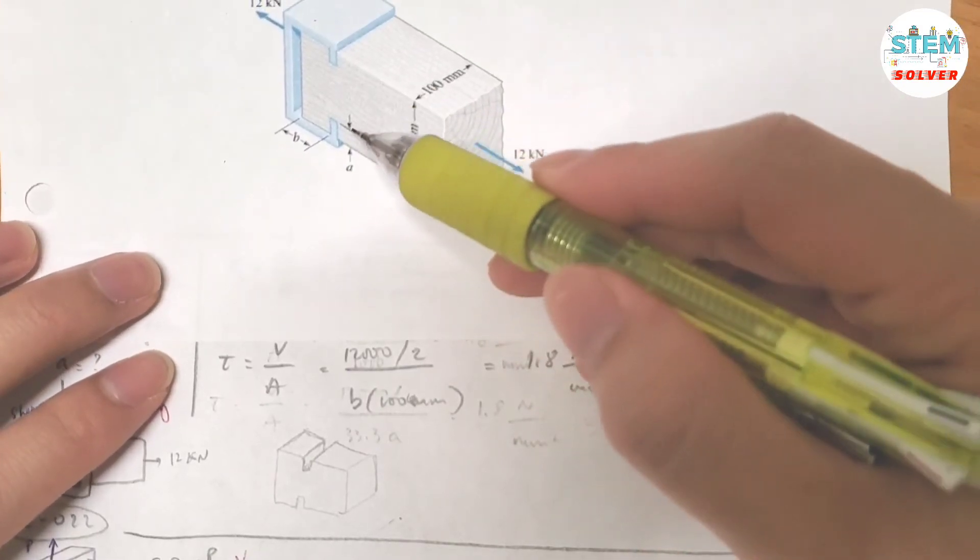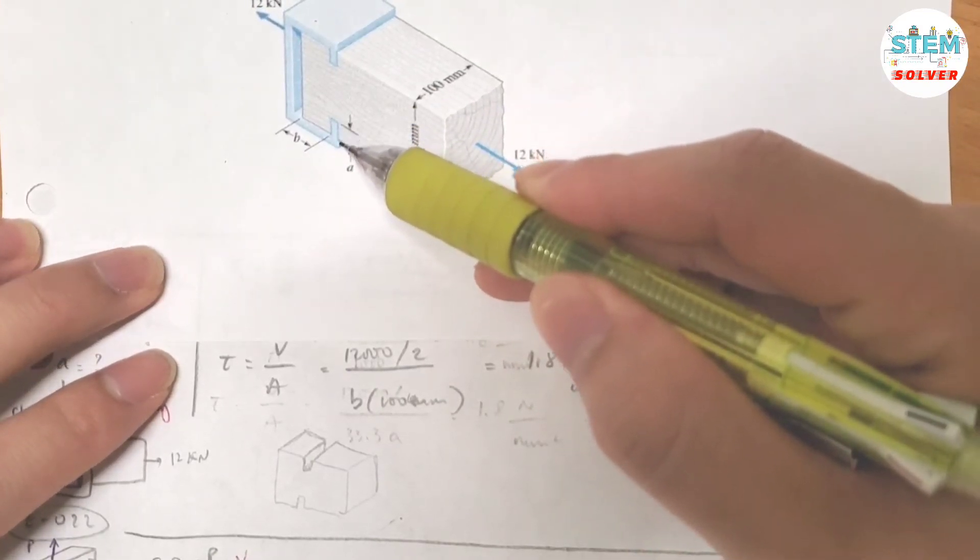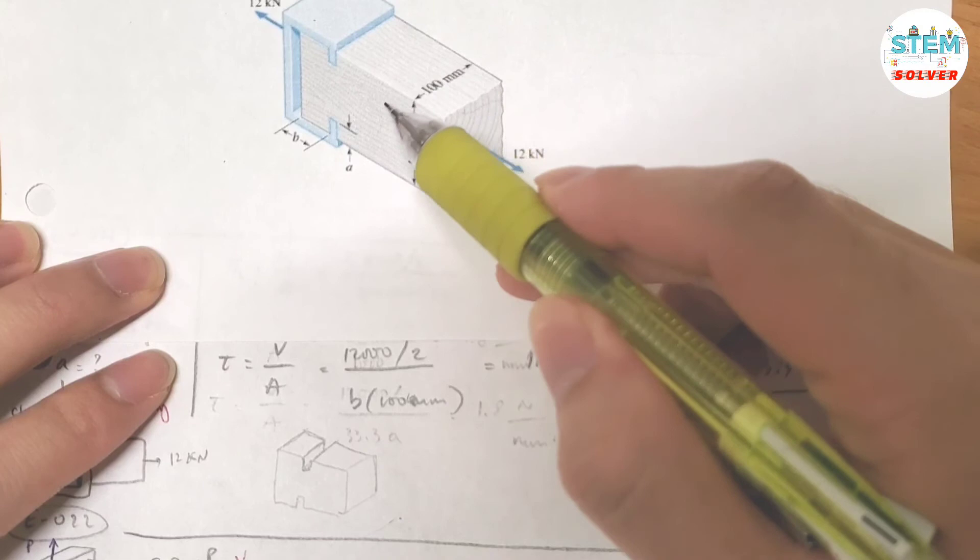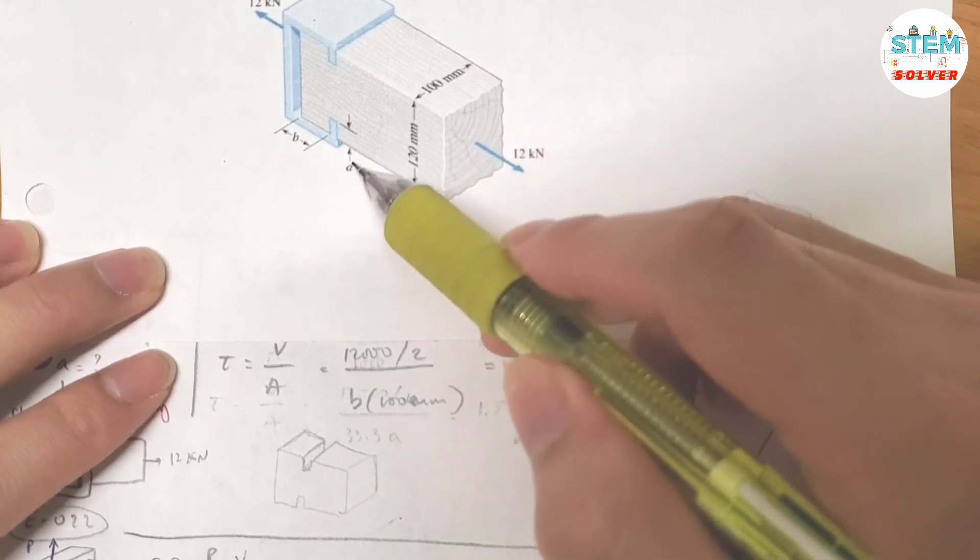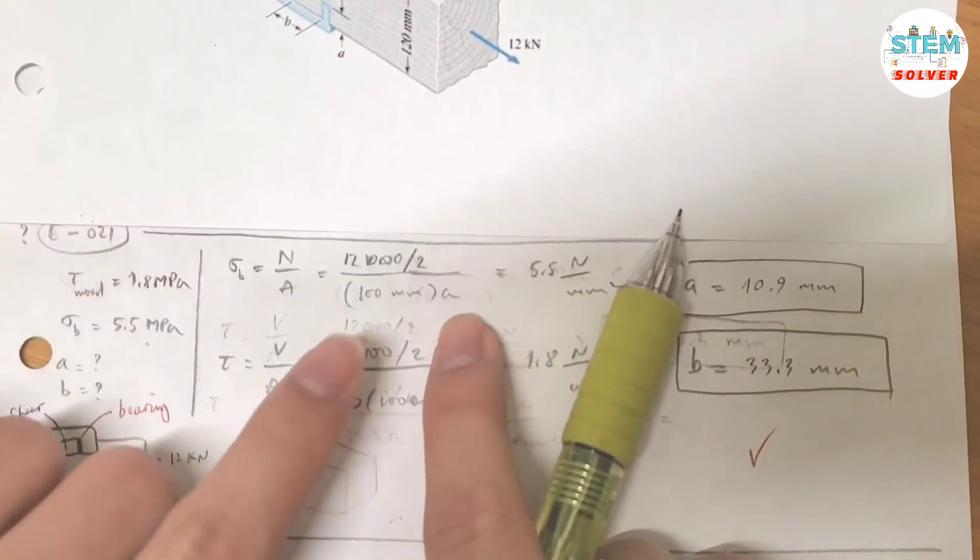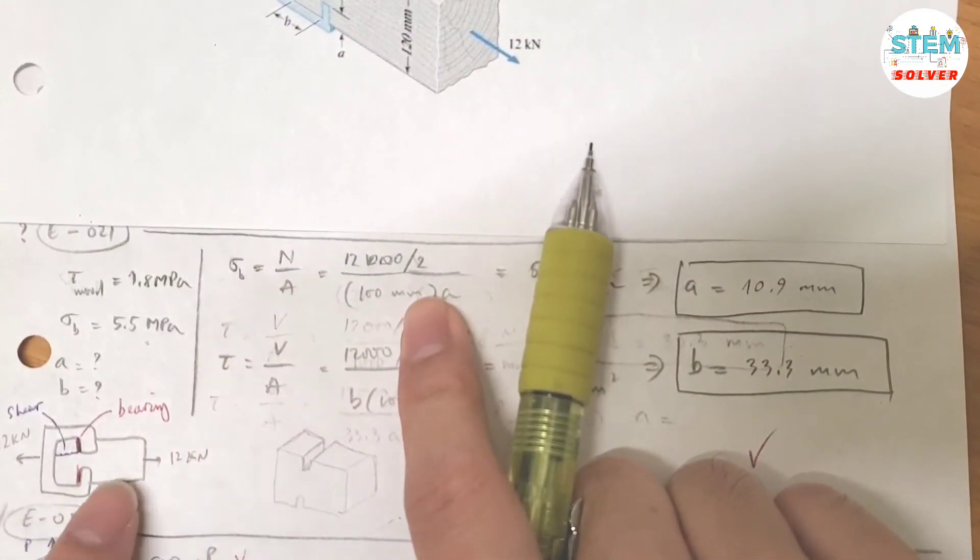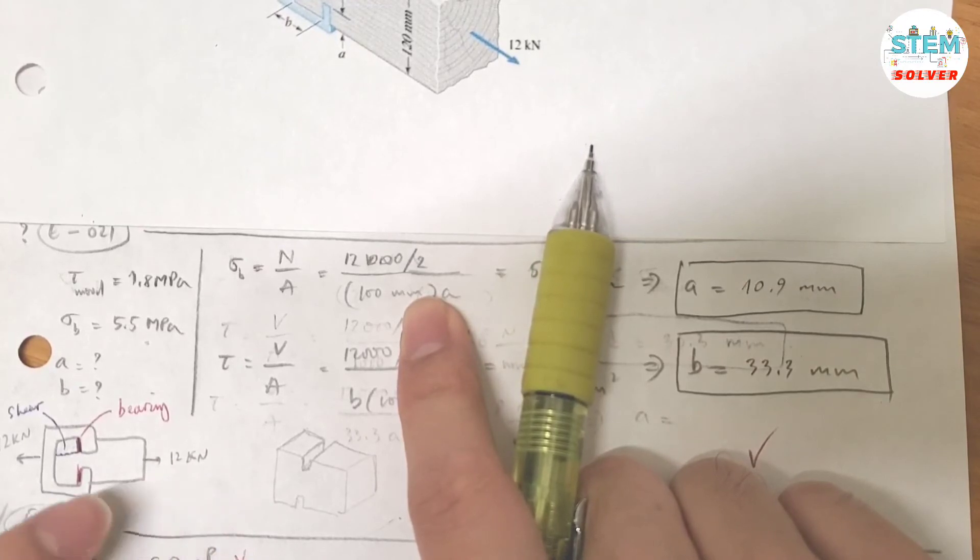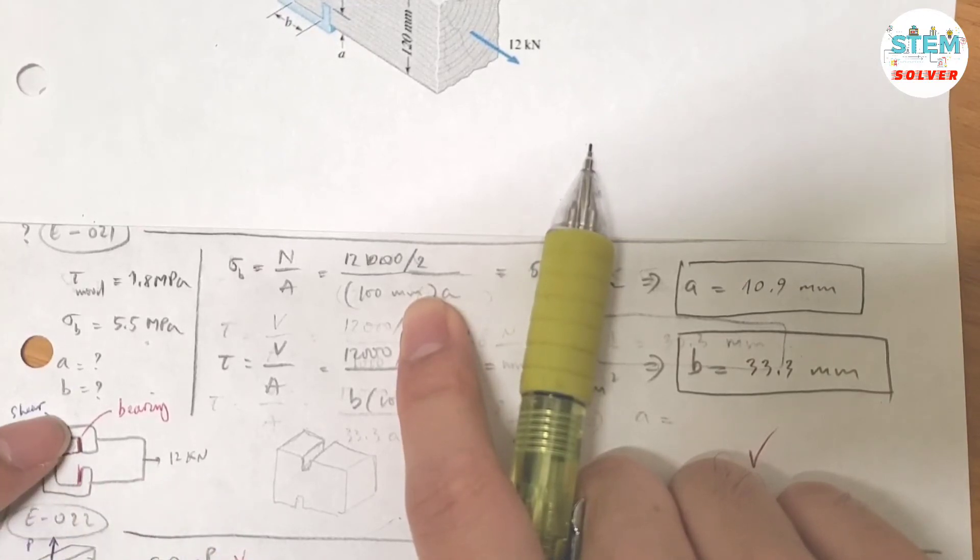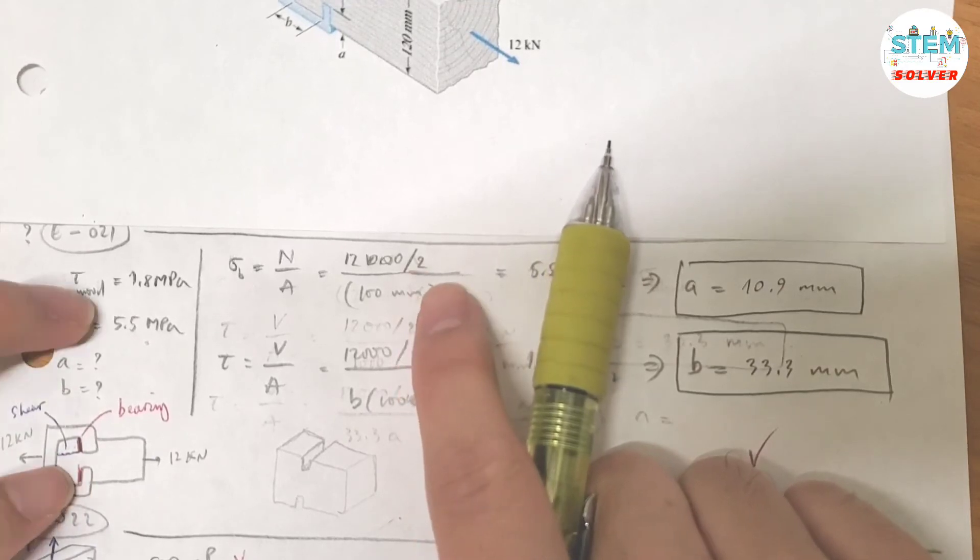You have this length is A and the length of the post on this side is 100. So, the area is 100 mm times A. And the normal force is equal to the pulling force here, 13,000 divided by 2, because you have 1 on top and 1 on the bottom.